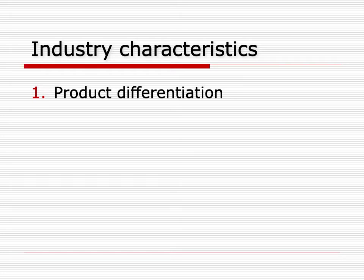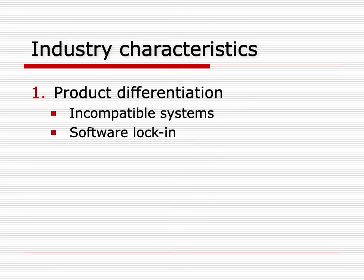While the technology has changed substantially, many of the characteristics of today's digital industries were apparent even in the early days of computing. Let me start with product differentiation. In computers, different systems were incompatible. Sperry-RAM software was not usable on an IBM machine, and many users needed to customize the software for their own application, which meant that they couldn't switch easily between hardware manufacturers. This is sometimes called software lock-in.